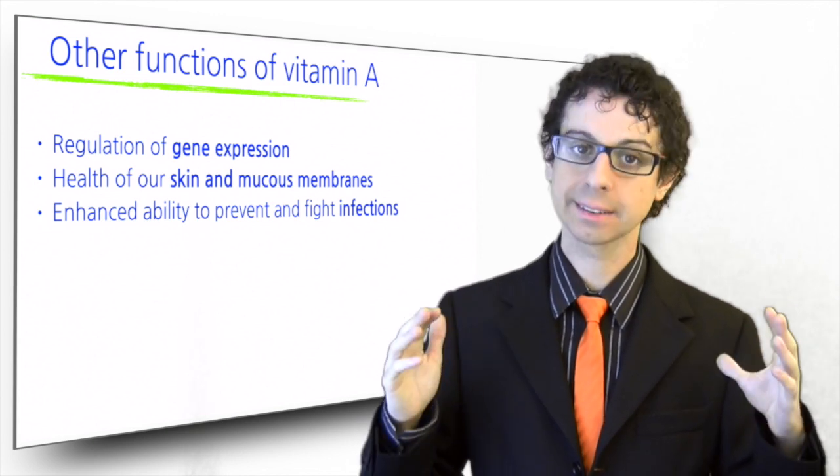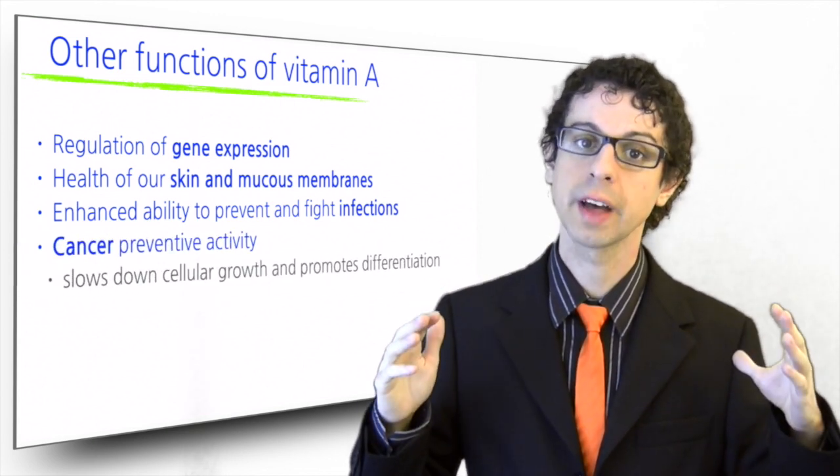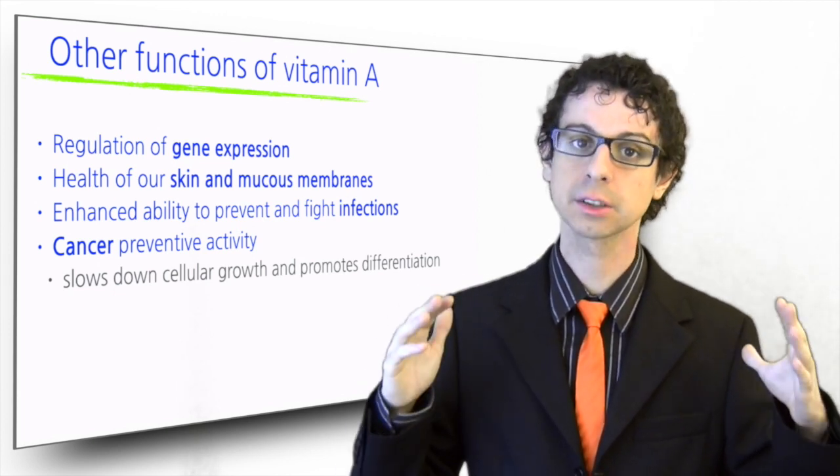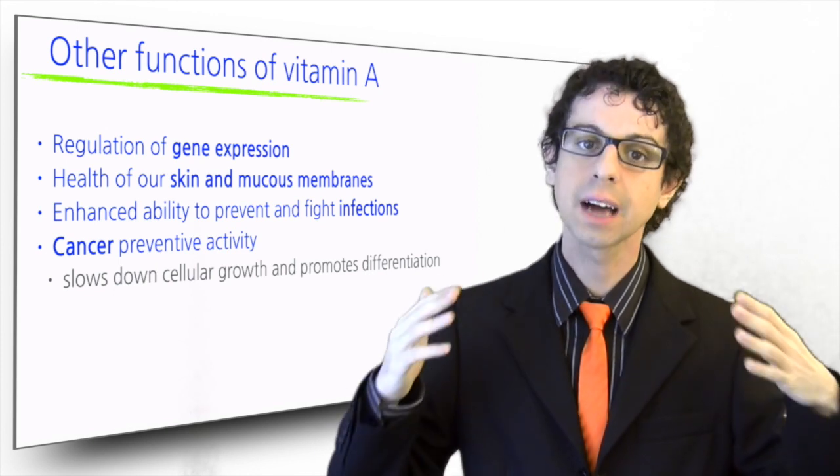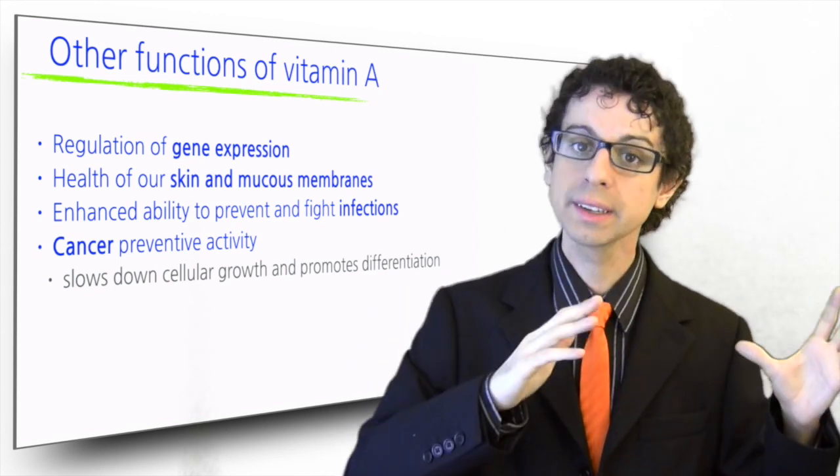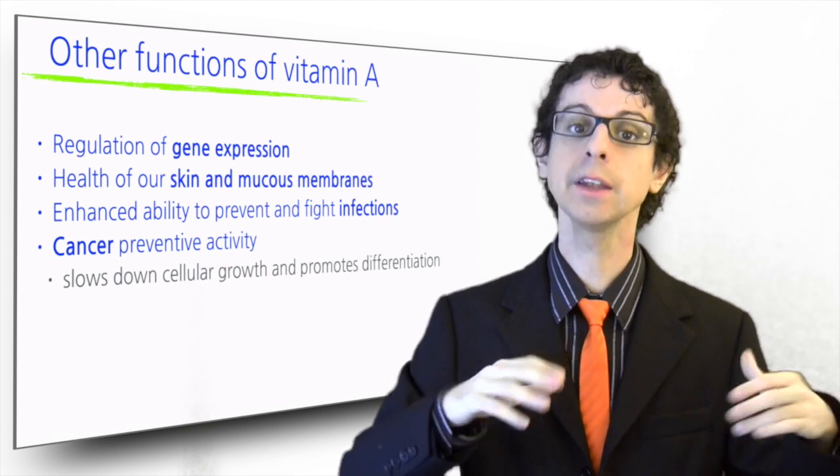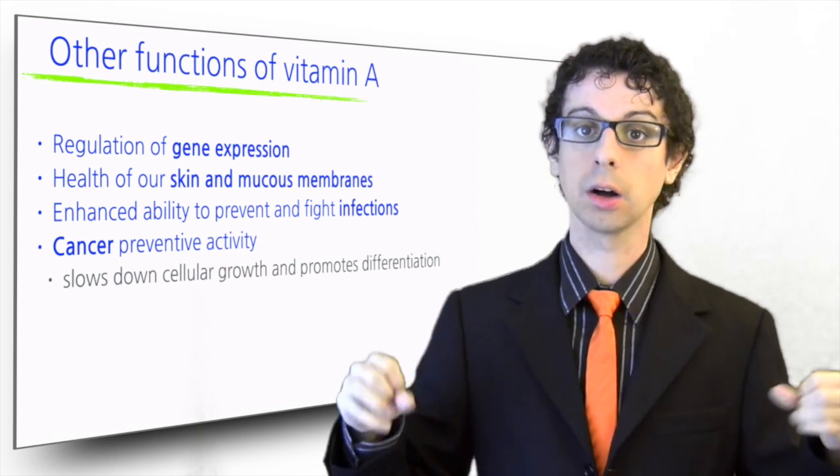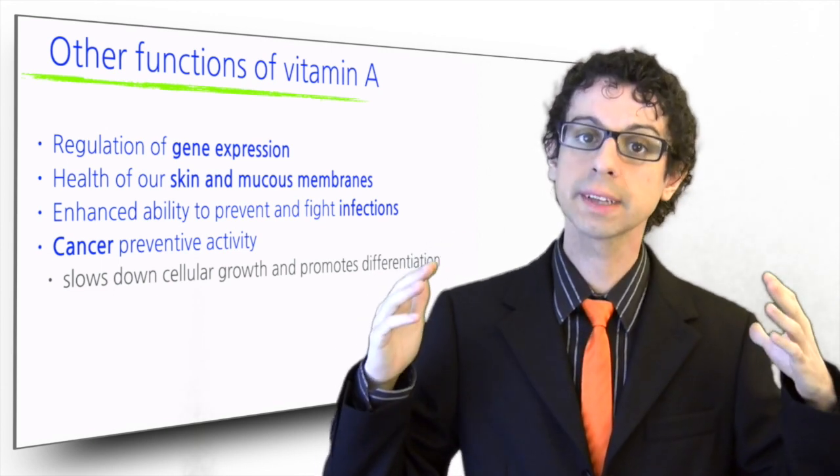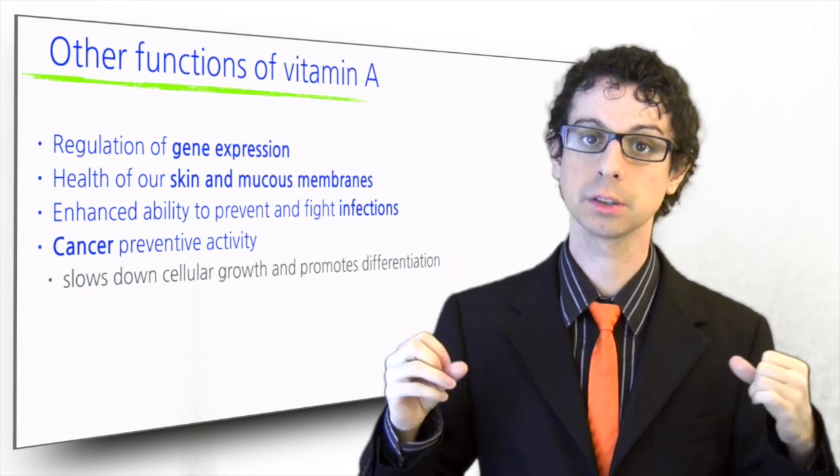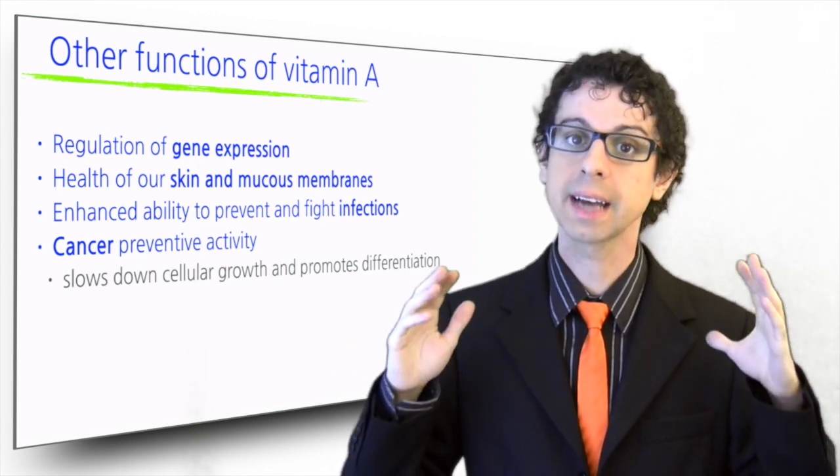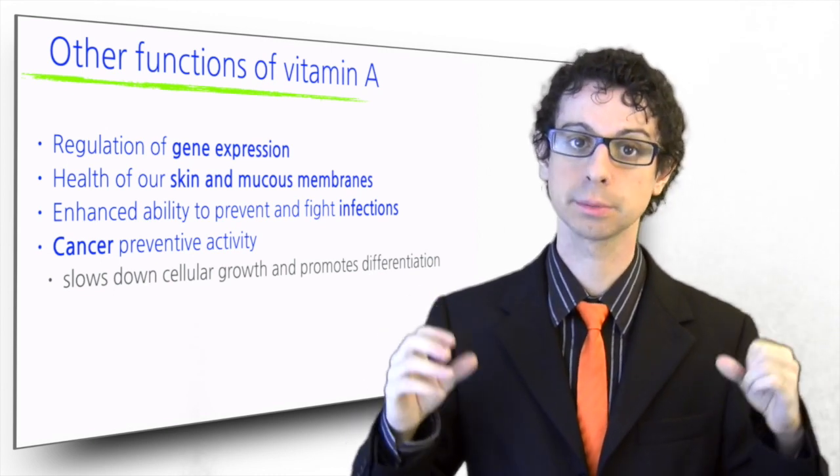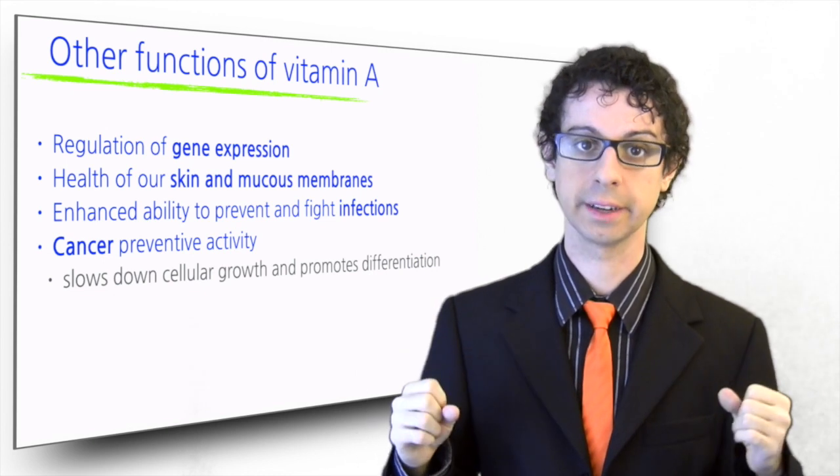One last role of vitamin A that we need to mention is its cancer preventive activity, especially for tumors of epithelial origins. Indeed, vitamin A acts by slowing down fast-growing cells so that they have time to differentiate. Both slowing down cell cycle progression and promoting correct differentiation are important cancer preventive mechanisms. On top of that, vitamin A also protects our skin from damage when we expose it to sunlight. And finally, carotenoids, which are precursors of vitamin A, independently exert cancer preventive functions, which we will discuss later in this course.